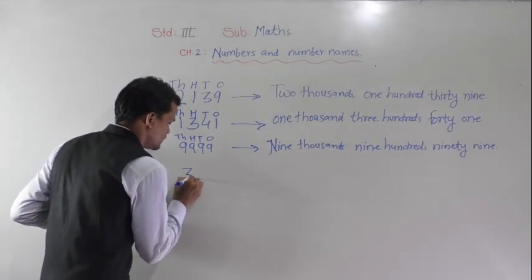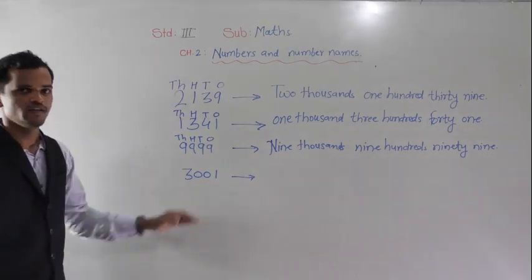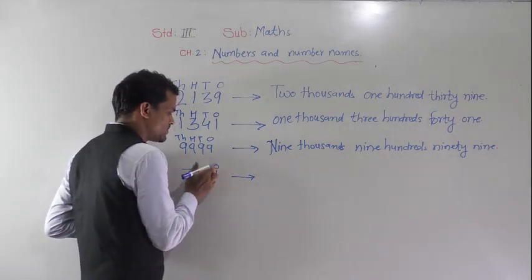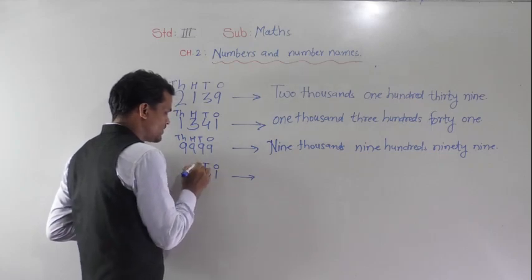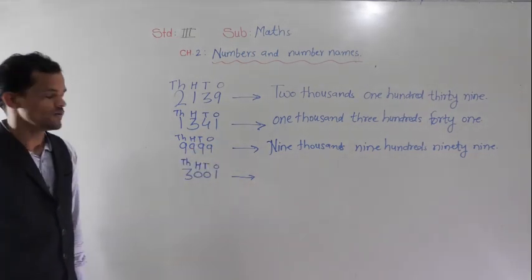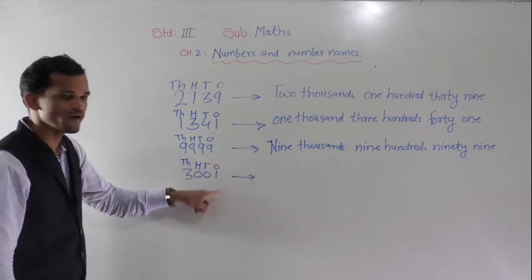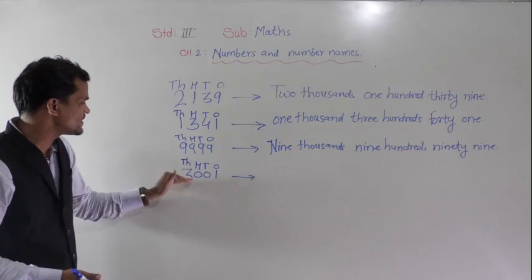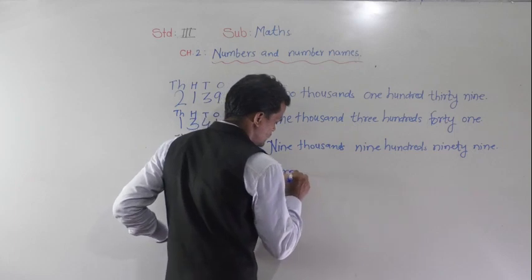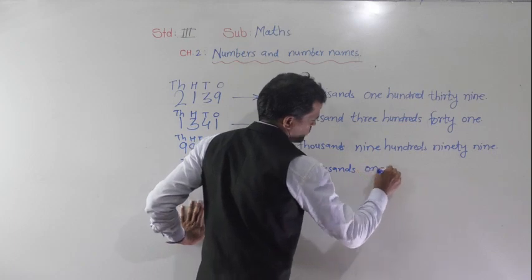One more number. How will you read this number? Give the names for the positions. This 1 comes at the 1s place, 0 comes at the 10s place, 0 comes at the 100s place, and 3 comes at the 1000s place. So read this number as 3001 — three thousand and one.